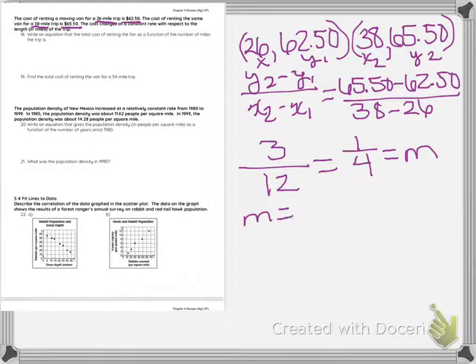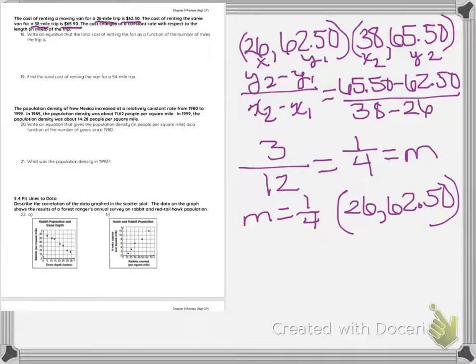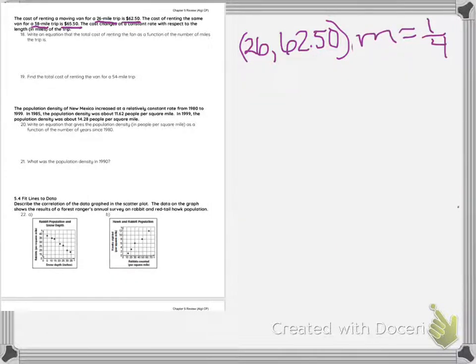So if I know my slope is 1/4 and I have two ordered pairs, I only have to take one. So I'm going to take 26 and 62.50, I can start creating a line. So I'm going to have my Y equals MX plus B, and I'm going to plug in my X, Y, and M.